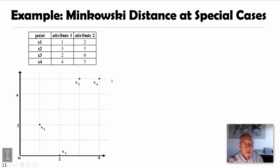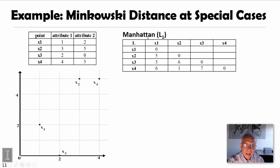Let's look at some examples. For the same data set, we get four points, two dimensions. For Manhattan distance, based on the city block distance, for example, from x2 to x1, you will go three blocks down, then two blocks left. So the Manhattan distance is 3 plus 2, you get 5. Of course, x1 to x1 itself is 0.